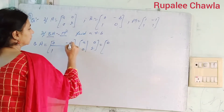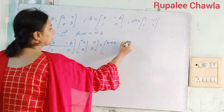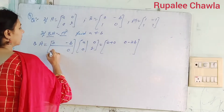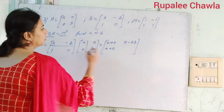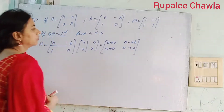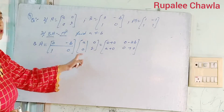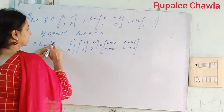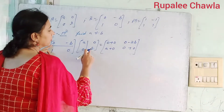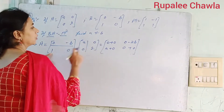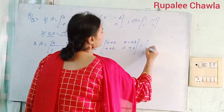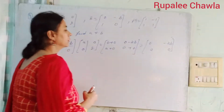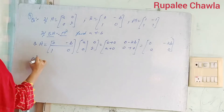A को zero के साथ करेंगे — zero, plus zero, zero: so that gives zero. Minus 2B, then A plus zero, zero plus zero. So what we get is zero, minus 2B, A, and zero. Thick hai? Now I will take the total of M square — M square का।